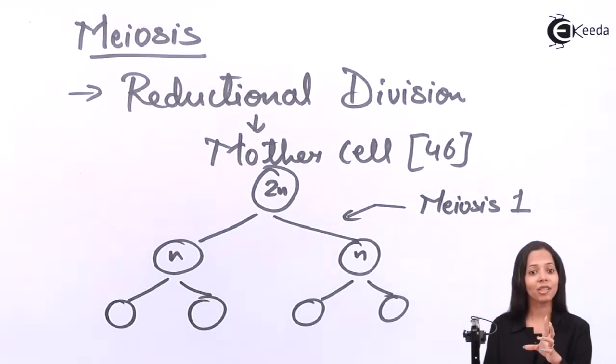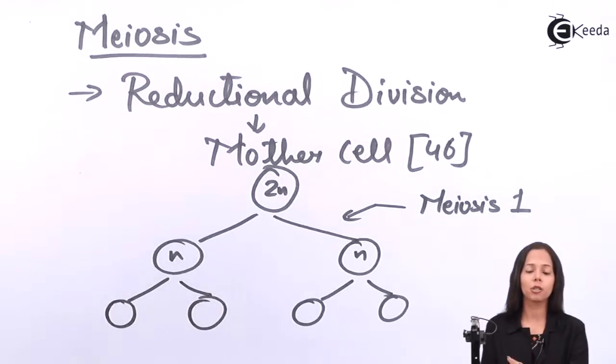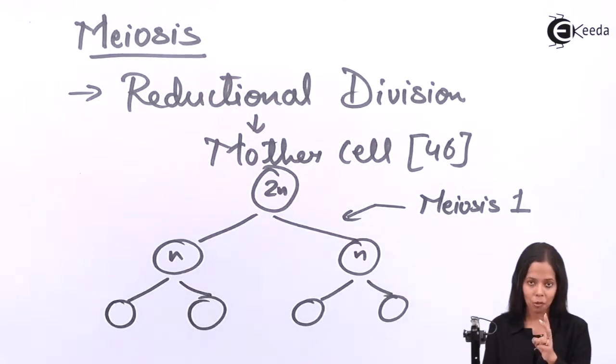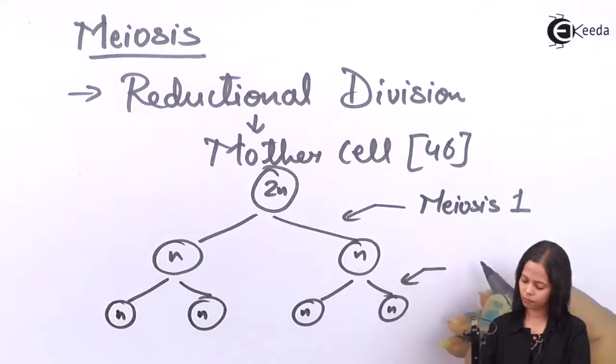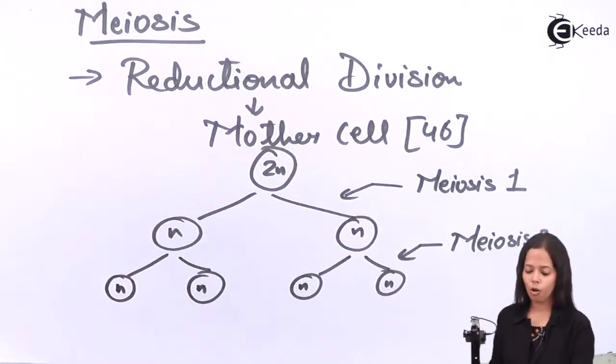And how it is formed because meiosis has 2 major stages. One is called as meiosis 1 and the second one is called as meiosis 2. What happens in meiosis 1? In meiosis 1, the diploid mother cell forms haploid daughter cell which is called as reductional division. And again those haploid daughter cells now called as mother cell will divide by mitosis to form 2, 2 haploid daughter cells. And this is called as meiosis 2. Meiosis 2 is exactly the mitotic division.